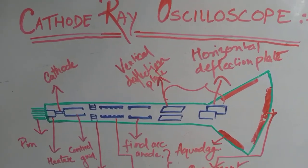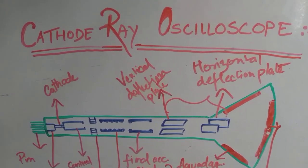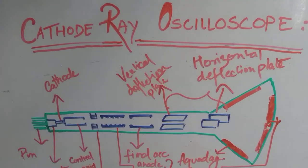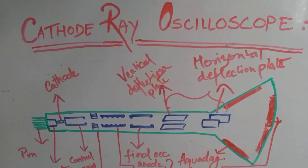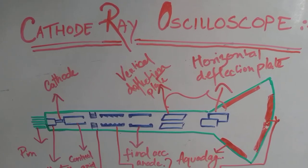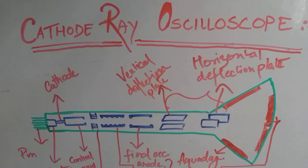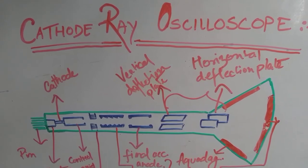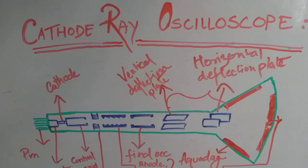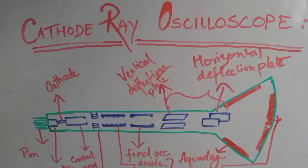That's all guys. This is all about the internal structure of the cathode ray oscilloscope. If I made the concept clear to some extent, then do like my video and subscribe to my channel and press the bell icon to get notified whenever I upload new videos. Do comment and let me know in the comment section what different topics of physics you want me to make more videos on.